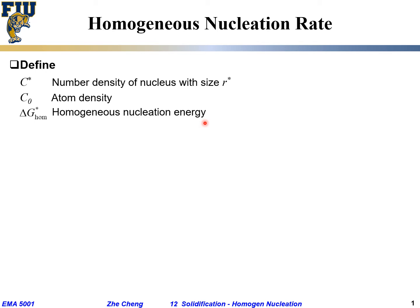The relationship between C* and C0 is: the number density of nuclei with the critical size R* equals the atomic density times a constant times an exponential term. This exponential term represents the probability of forming a cluster with size R*, given by exp(−ΔG*/kT).